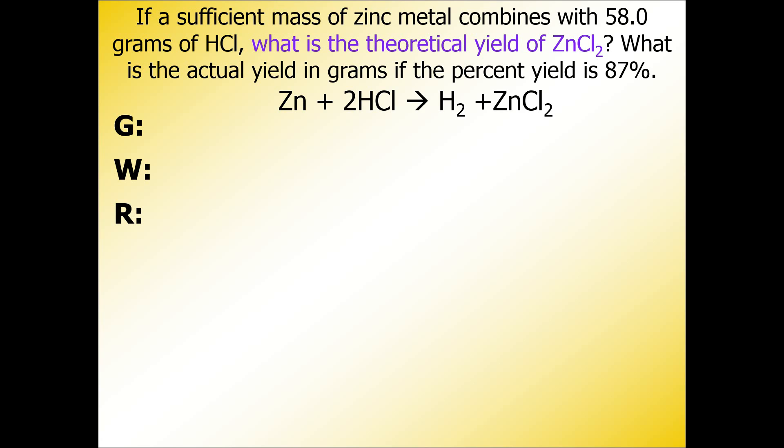Here's our last example of a percent yield question. If sufficient mass of zinc metal combines with 58 grams of HCl, what is the theoretical yield of ZnCl2? What is the actual yield in grams if the percent yield is 87 percent?